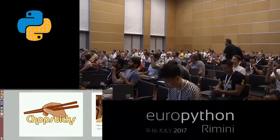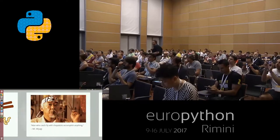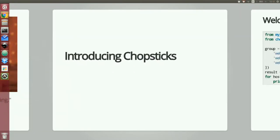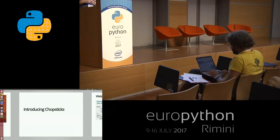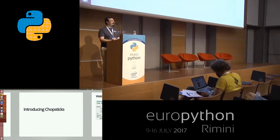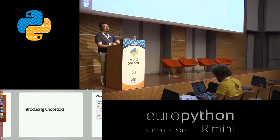I'm here to tell you about Chopsticks, which is a new library I wrote over the past year for running Python code on remote hosts. I'm Daniel Pope — for the purposes of this talk, you can call me Daniel-san. Chopsticks fundamentally allows you to run Python code on remote POSIX machines in parallel over SSH with nothing installed except the SSH server and Python — system Python.